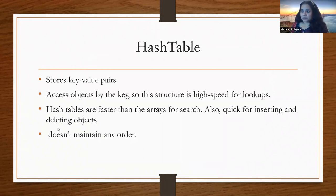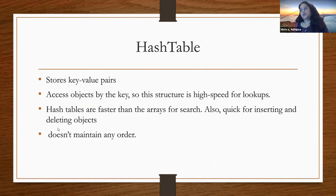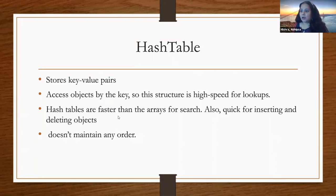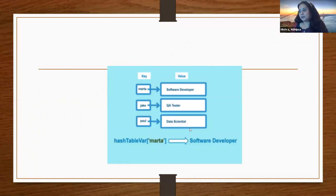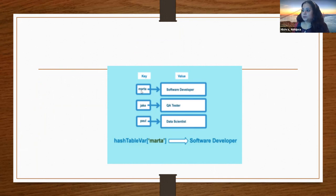Hash tables store data as key-value pairs and allow you to access data by its key. This structure is most commonly used for lookups — it provides really fast speed for lookups, searching, inserting, and deleting objects. Hash tables are by far the most convenient data structure, with the only drawback being they do not maintain order and store everything as a key-value pair. For example, we have keys Martha, Jake, and Paul with values software developer, QA tester, and data scientist. Querying hash_table['Martha'] would return software developer.